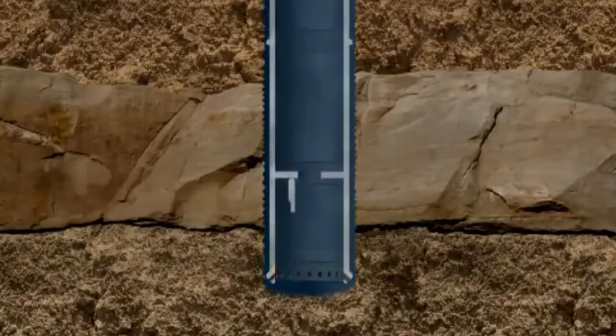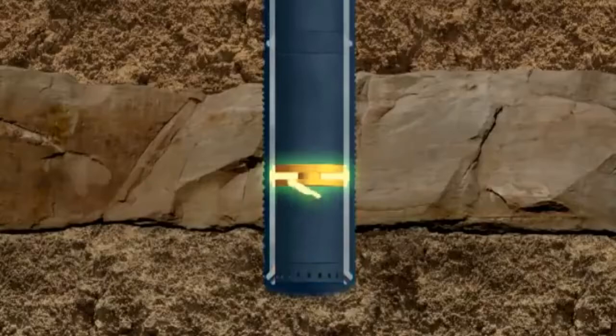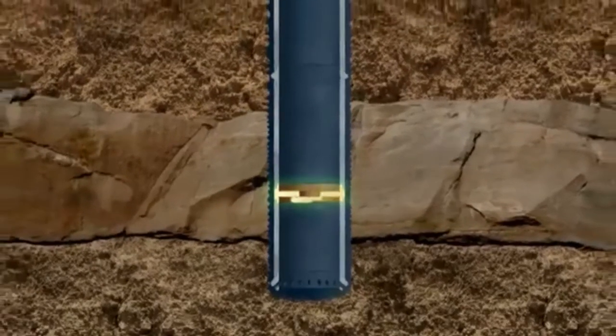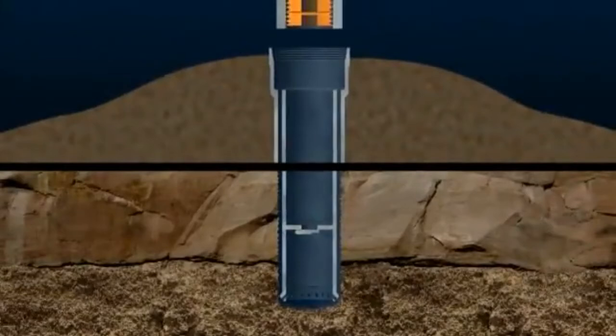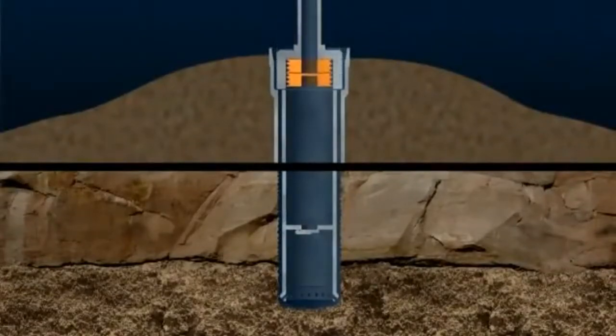Above the shoe is a flap valve called a float collar. A cementing tool is connected to the top of the conductor. A plug that pushes the seawater out is driven downwards by high-pressure cement that fills the conductor.